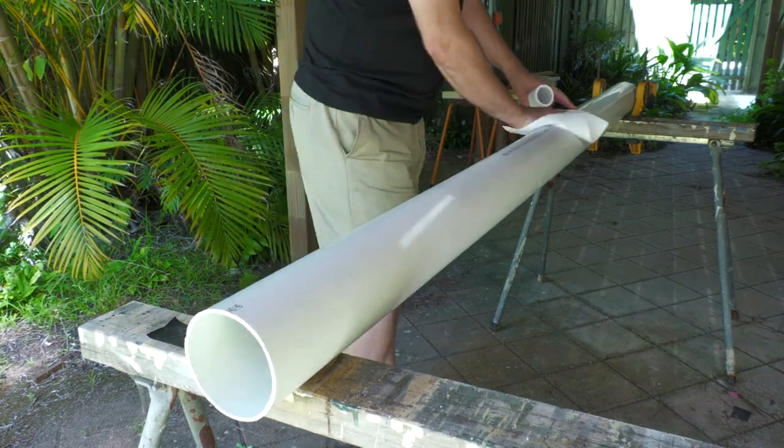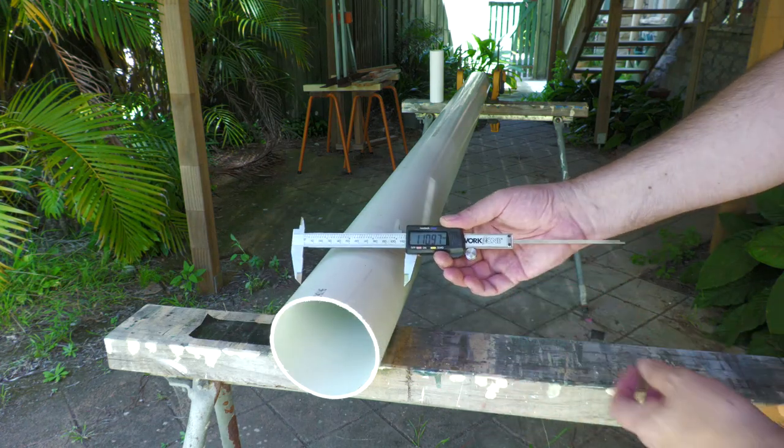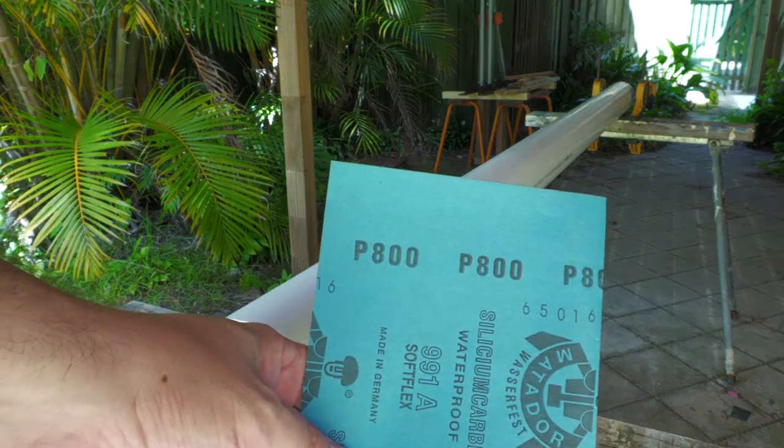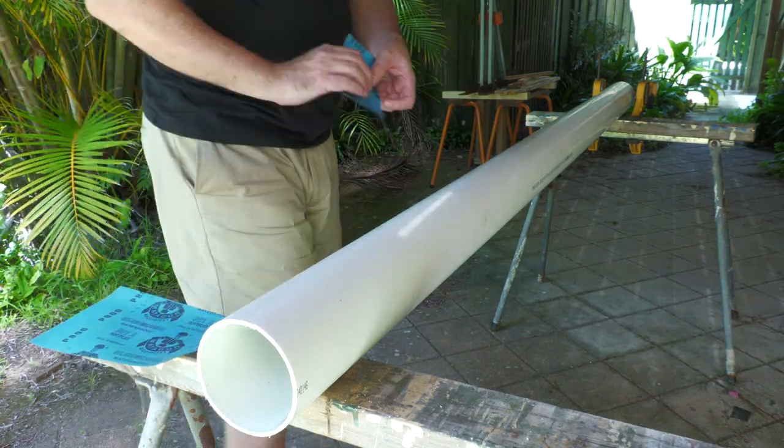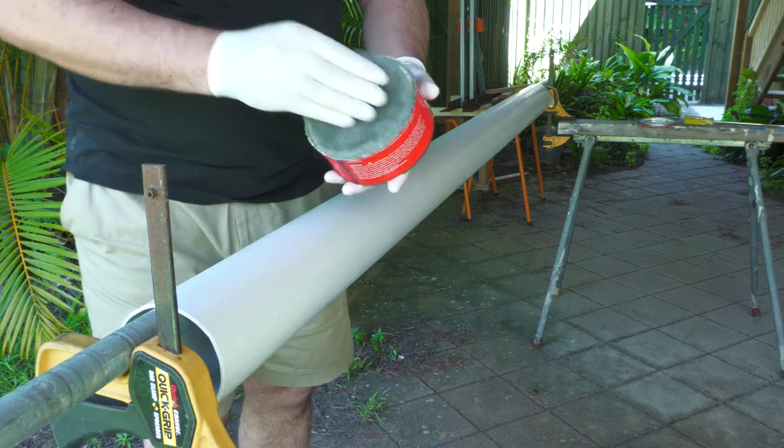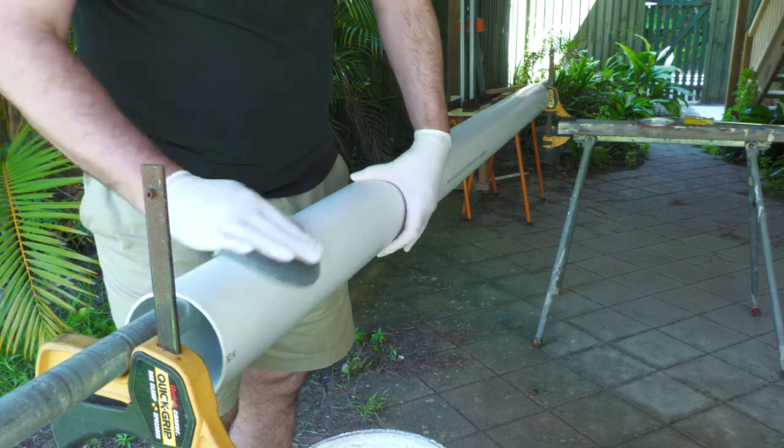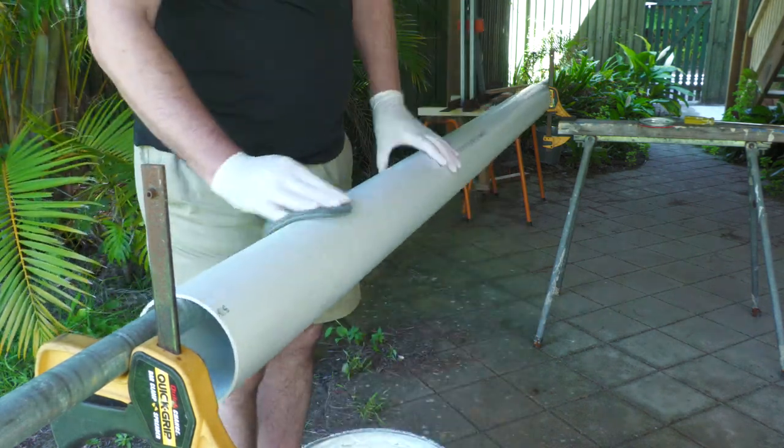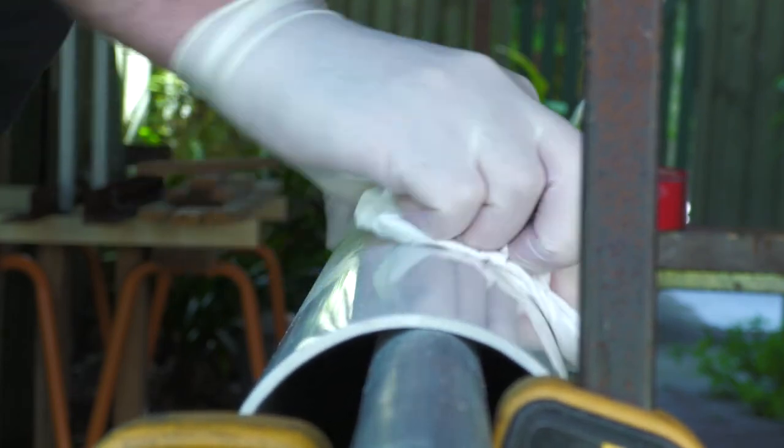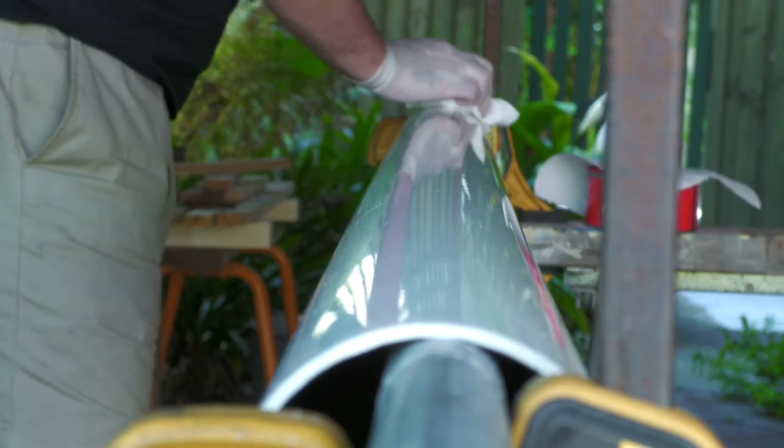We first start off by preparing the mandrel that's going to be the diameter of the rocket. This PVC pipe is about 111 millimeters in diameter. We sand it with 800 grit sandpaper to remove any scratches or contaminants on the surface. Then we give it a coat of this mold release wax. It dries fairly quickly, and then you can just polish it off to get a nice finish. We did three coats of this just to really make sure the surface is as smooth as possible. That helps with removing the tube. Here's the mirror-like finish you end up with.